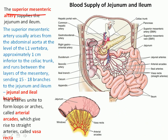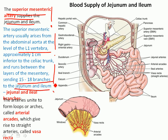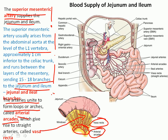The superior mesenteric artery supplies both the jejunum and ileum, arising at the level of L1 vertebra — about one centimeter inferior to the celiac trunk. It runs between the layers of the mesentery, sending approximately 15 to 18 branches — the jejunal and ileal arteries — to supply the intestine. These arteries unite peripherally to form arterial arcades, which in turn form vasa recta that penetrate and supply the small intestinal wall.